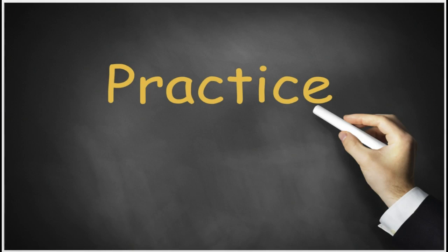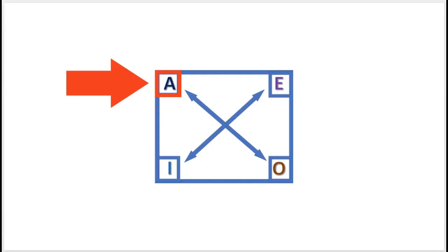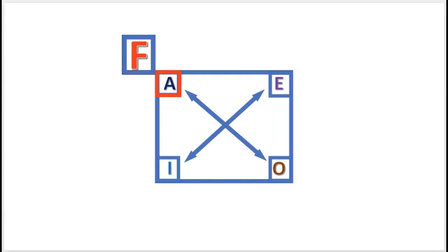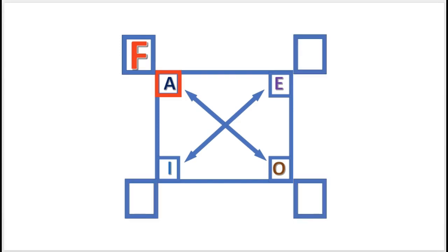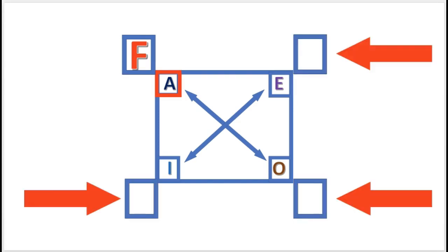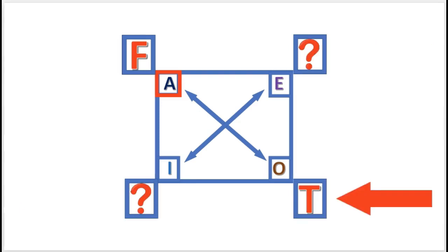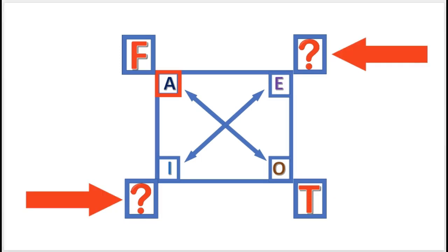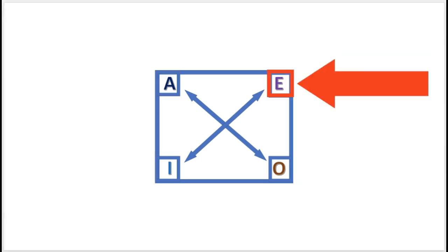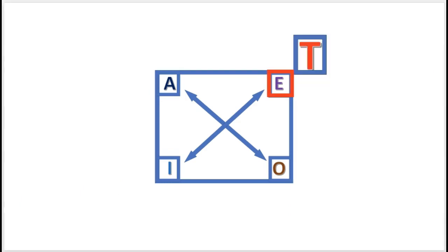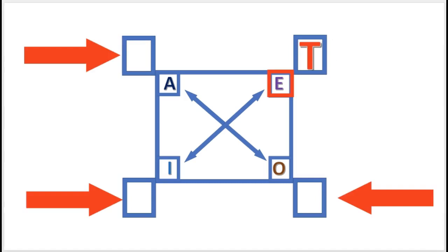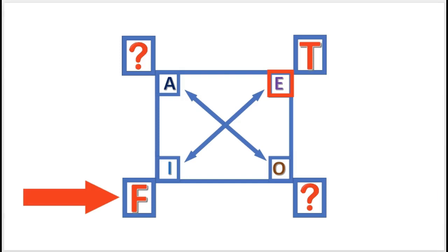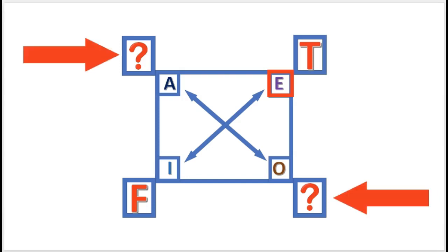Let's work a few practice problems. Practice problem one: if this A proposition is false, what is the truth value of the other propositions? O is true, and E and I are undetermined. Next practice problem: if the E proposition is true, what is the truth value of the other propositions? I is false, and A and O are undetermined.